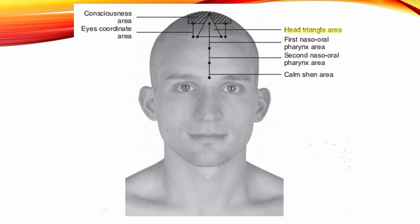Head Triangle. Location: 3 cm above the inner canthus at the anterior-posterior hairline. Locate two points on both sides of the head. Starting toward the anterior-posterior midline, draw an equilateral triangle — the head triangle. Insert the needles at three corners, 1 cm toward the middle. Indication: Insomnia.